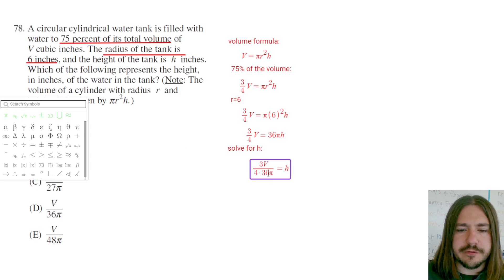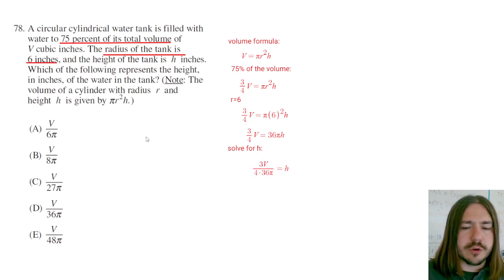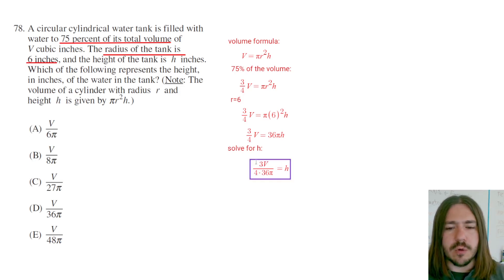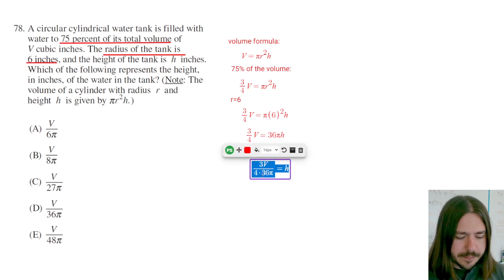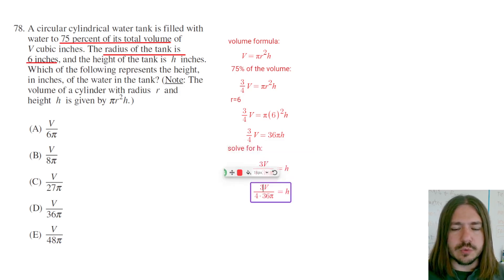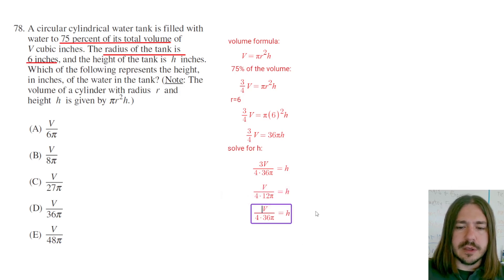And then all I need to do is simplify this fraction here. You could do the 4 times 36 and then simplify, but it's kind of easy to do this 3 over 36. I think I'm going to simplify that first. 3 over 36 is going to reduce to 1 over 12. And then 4 times 12 is 48. So I end up with v over 48 pi equals h.